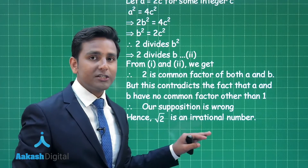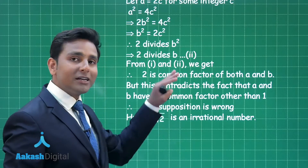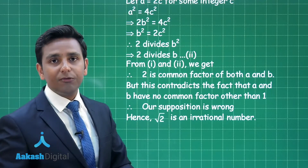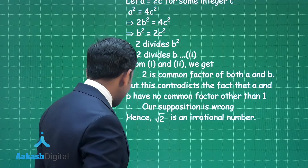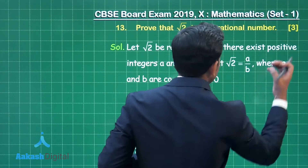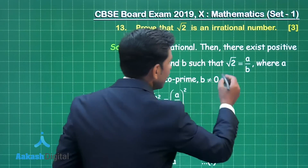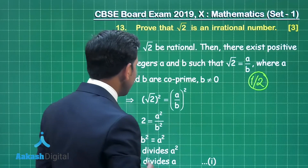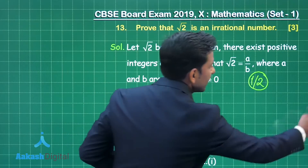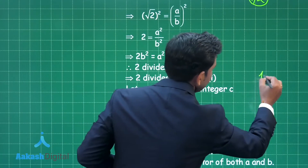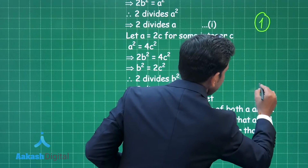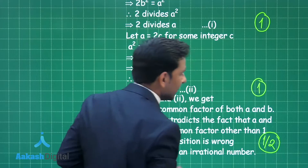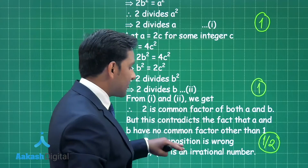I hope you understood the solution of this question. If you have written the solution in this manner then you can definitely score 3 out of 3. Now the marking scheme: assuming √2 is rational gives half a mark. The simplification step getting 2b² = a² gives 1 mark, the step concluding 2 divides b gives 1 mark, and the final conclusion that the assumption was wrong gives the remaining half mark.